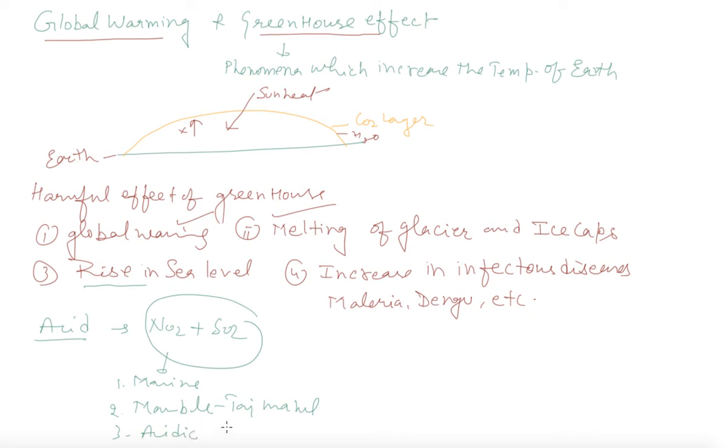Soil becomes acidic, its fertility will decrease. Heavy metal ions in the soil are leached from the soil and enter into the well water that is drinkable, which produces many toxic effects. Due to acid rain, heavy metal ions in the soil like Al³⁺, Cu²⁺, Pb²⁺, Hg²⁺ are leached from the soil and enter into the well water - drinking water - which produces many toxic effects.